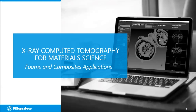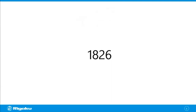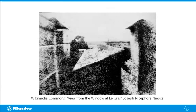Today, we will talk about foams and composites applications. X-ray imaging is a form of photography, and the history of photography goes back to the 1800s. The earliest surviving camera photograph was taken in 1826, or maybe 1827 — it's never been clear. This is an enhanced version of that photograph. A French scientist, Nicéphore Niépce, invented the first photographic process and recorded this view.